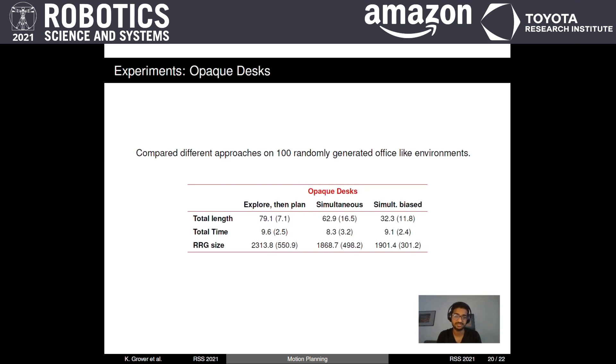In the next table, we have results for opaque desks and here too, our biasing approach outperforms both the other approaches by some margin in terms of path length.